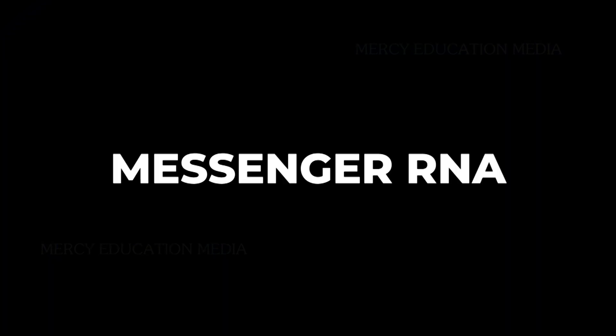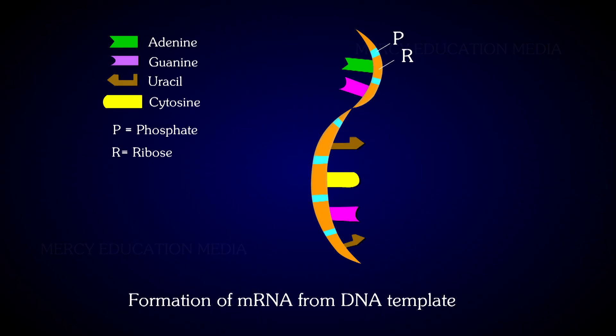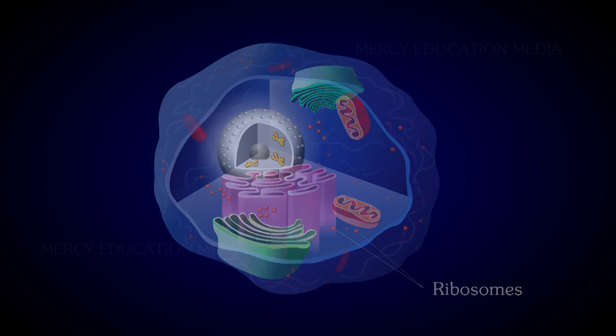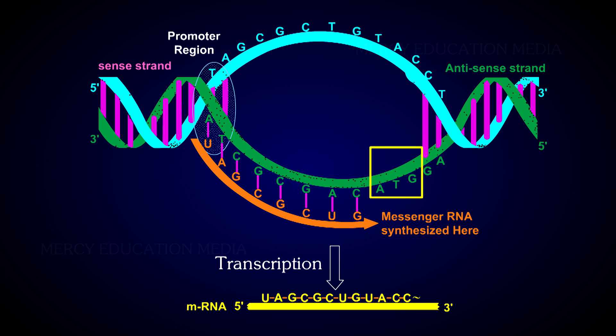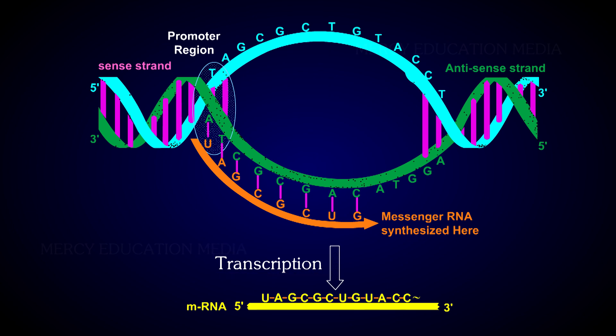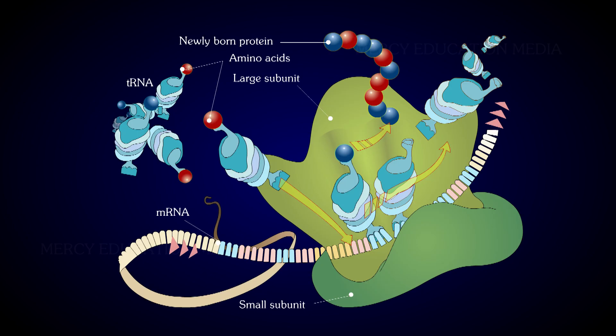Let us know about the messenger RNA. As the name suggests, mRNA carries the genetic information from DNA to the ribosomes. Genetic information on the DNA is transcribed into the mRNA by a process called transcription. Here the message is translated into action, i.e., based on the genetic information, different types of proteins are synthesized.